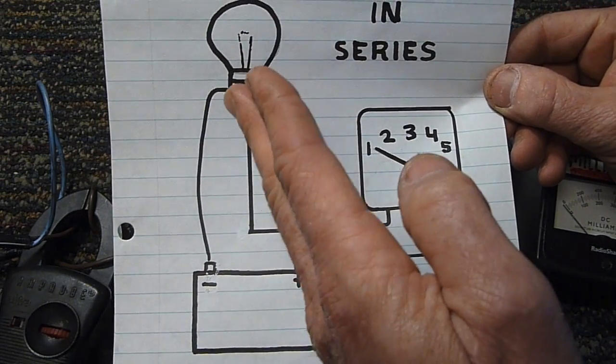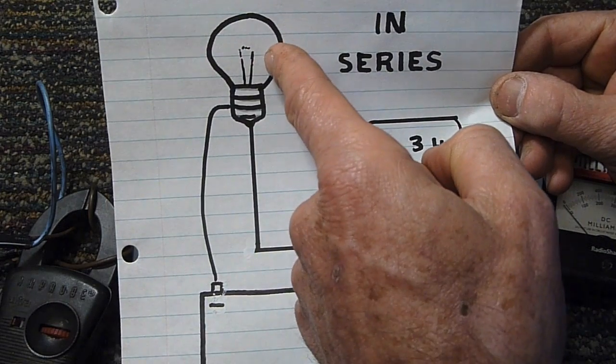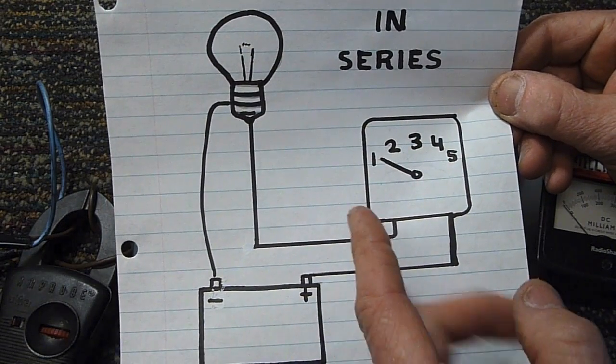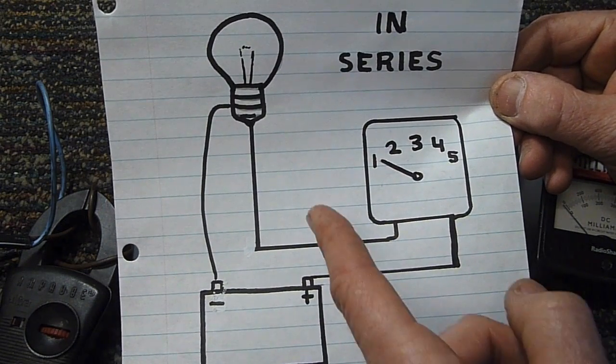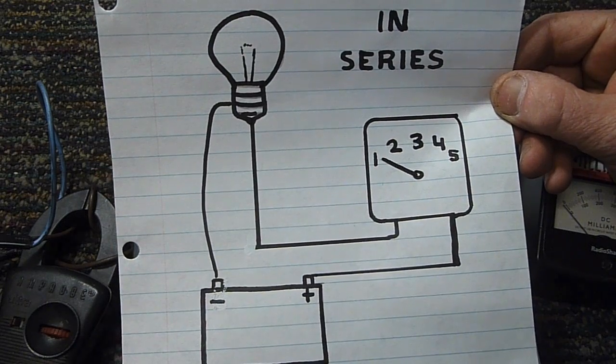Here's a series circuit. So for example, if we wanted to measure the current going through this lamp here, we simply cut one of the wires, put the meter in series with the load, not in parallel.